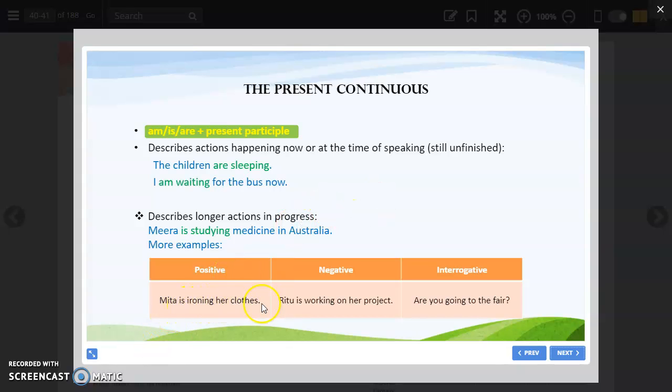That is a longer action that is ongoing. Children are sleeping. I am waiting for the bus now. More examples: Meeta is ironing her clothes. Ritu is working on her project. Are you going to the fair? These are interrogative and negative forms. Because it is describing a very long action, work that is going on for a long time. Like studying medicine doesn't mean reading 24 hours, but her studies are in that. So we will say Mira is studying medicine. I am working as a pilot in Air India. Working in this case describes a longer action.